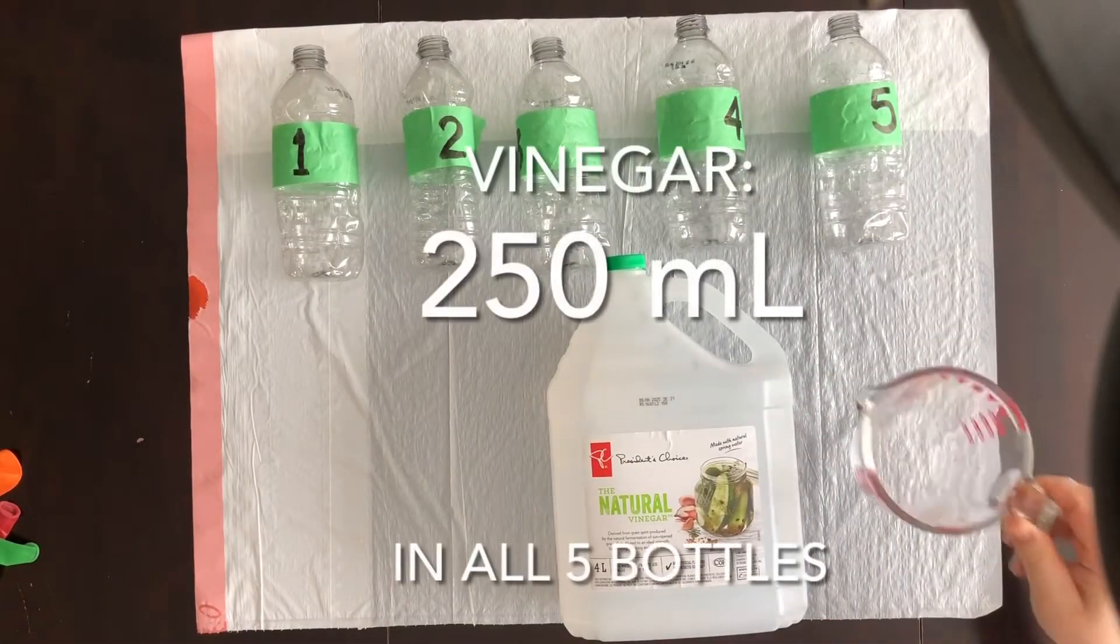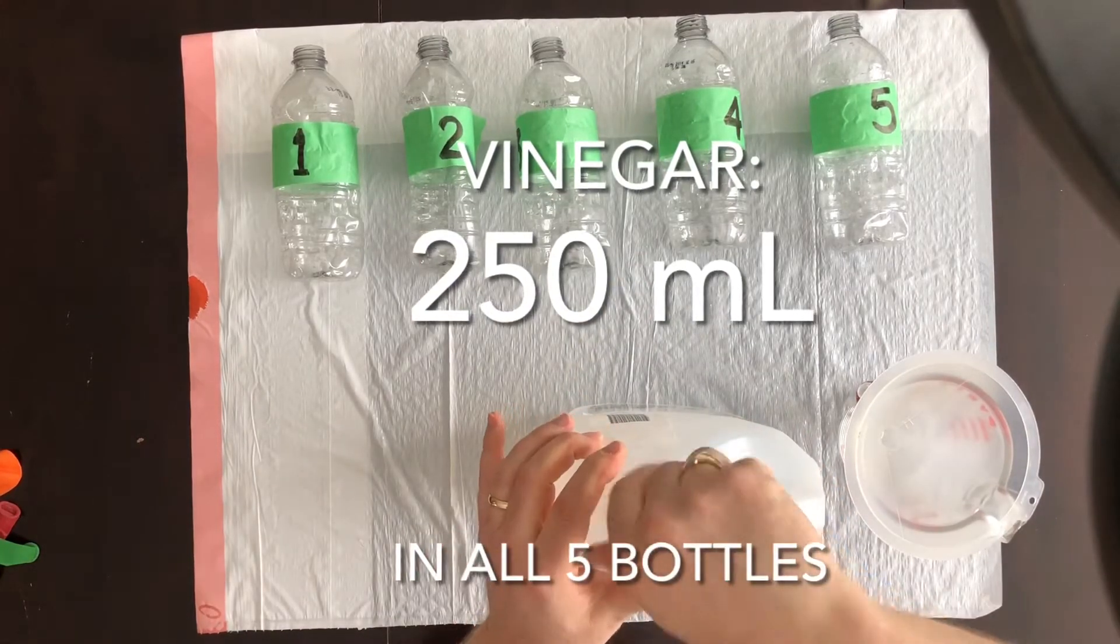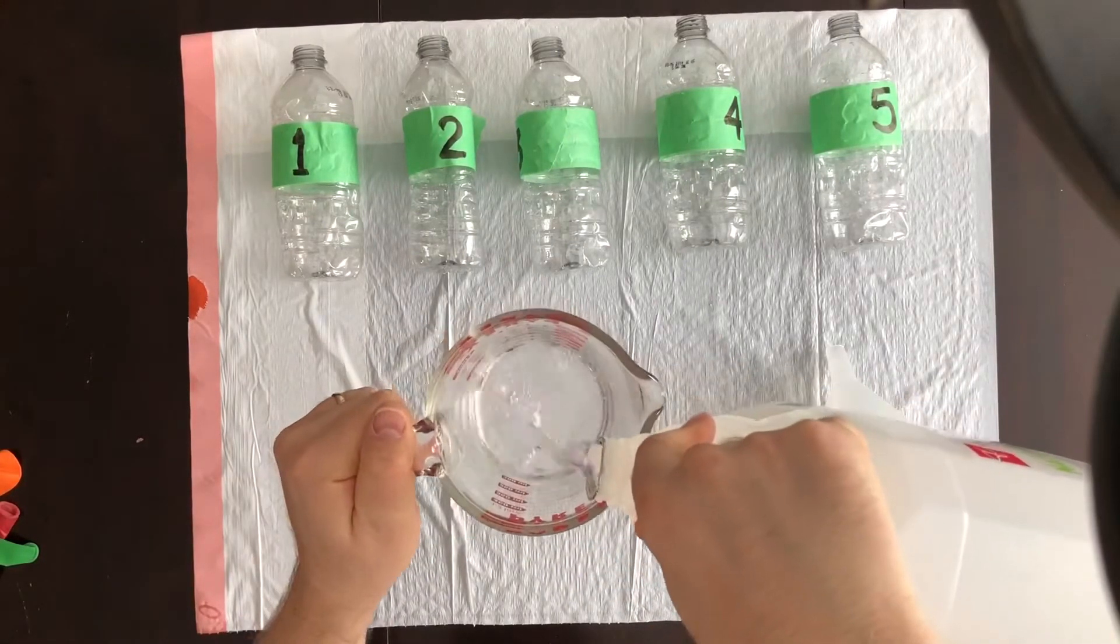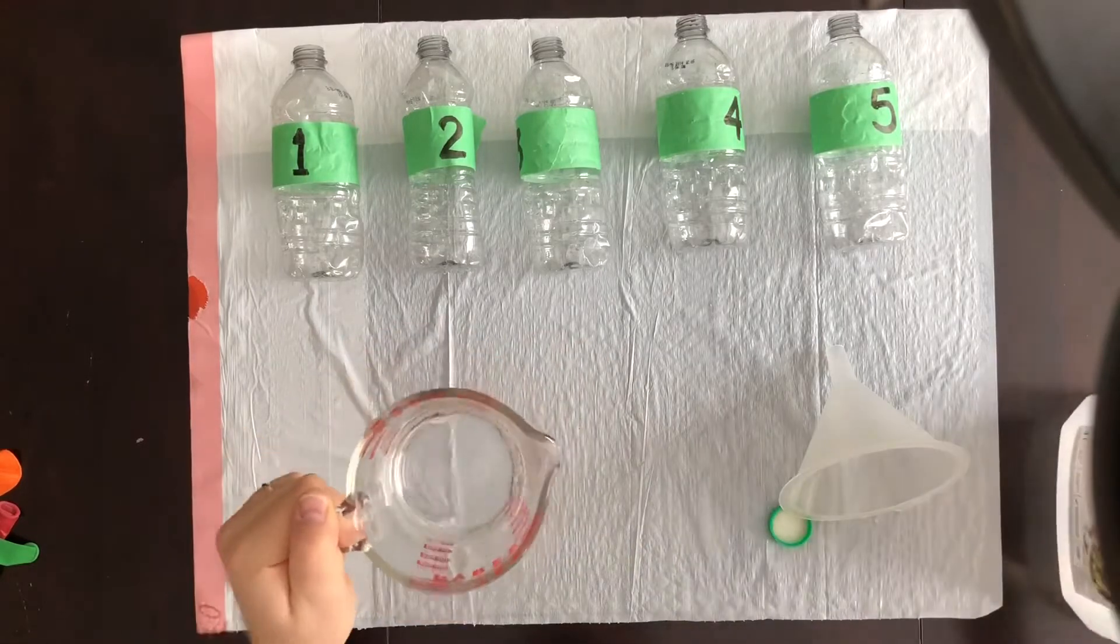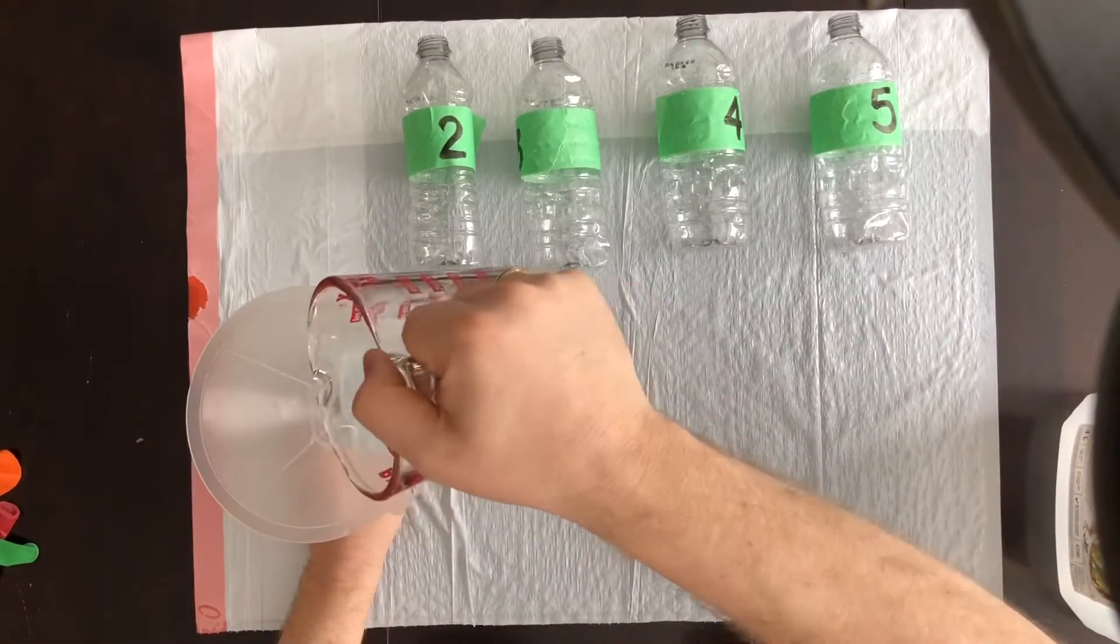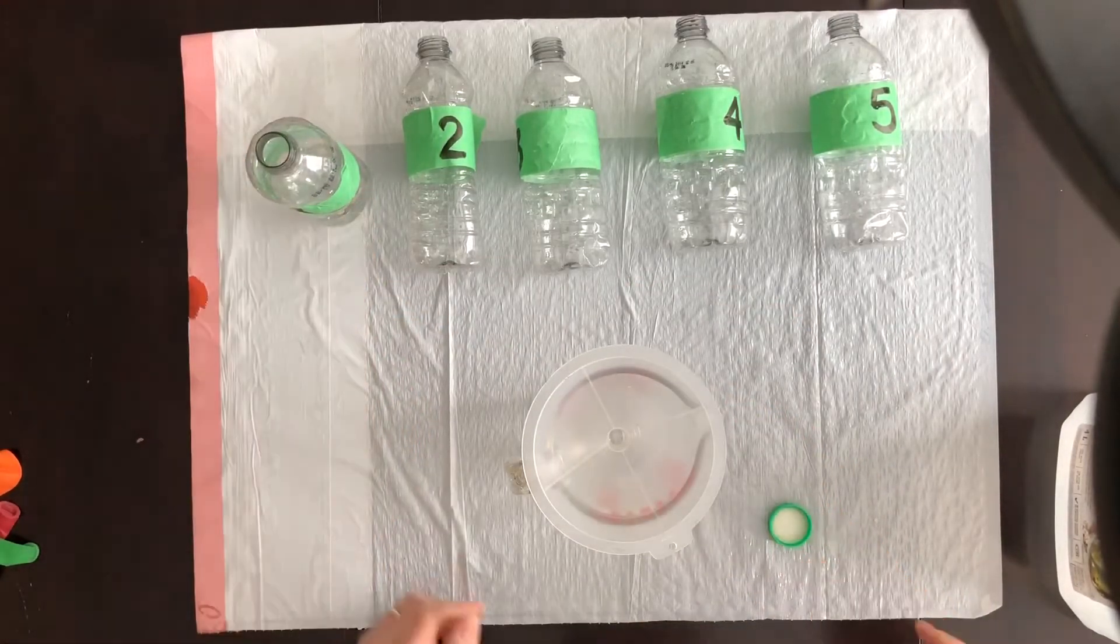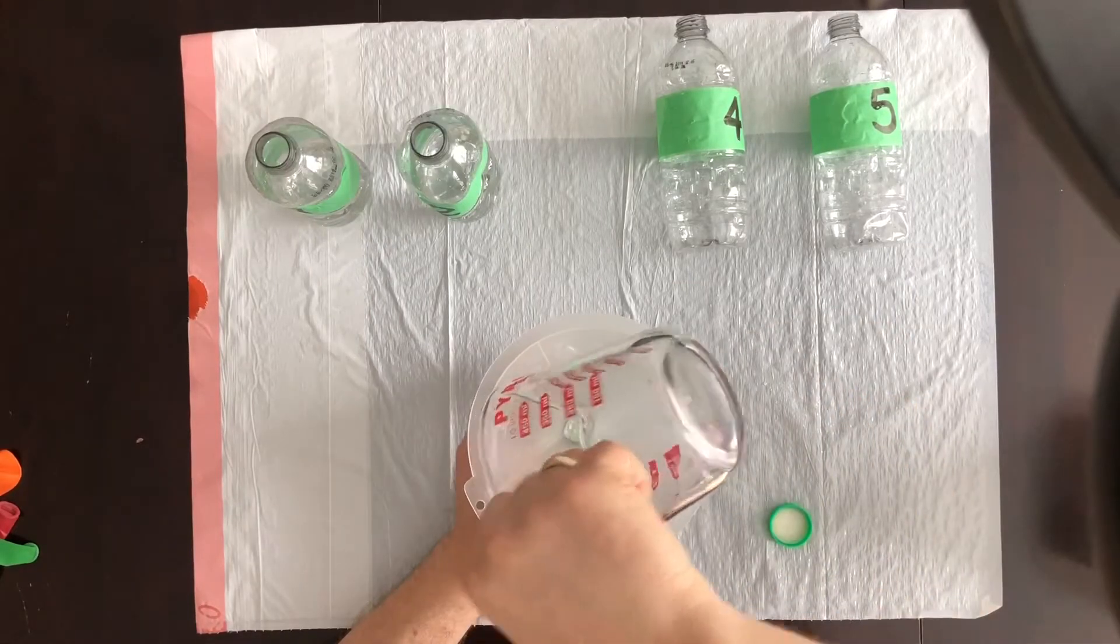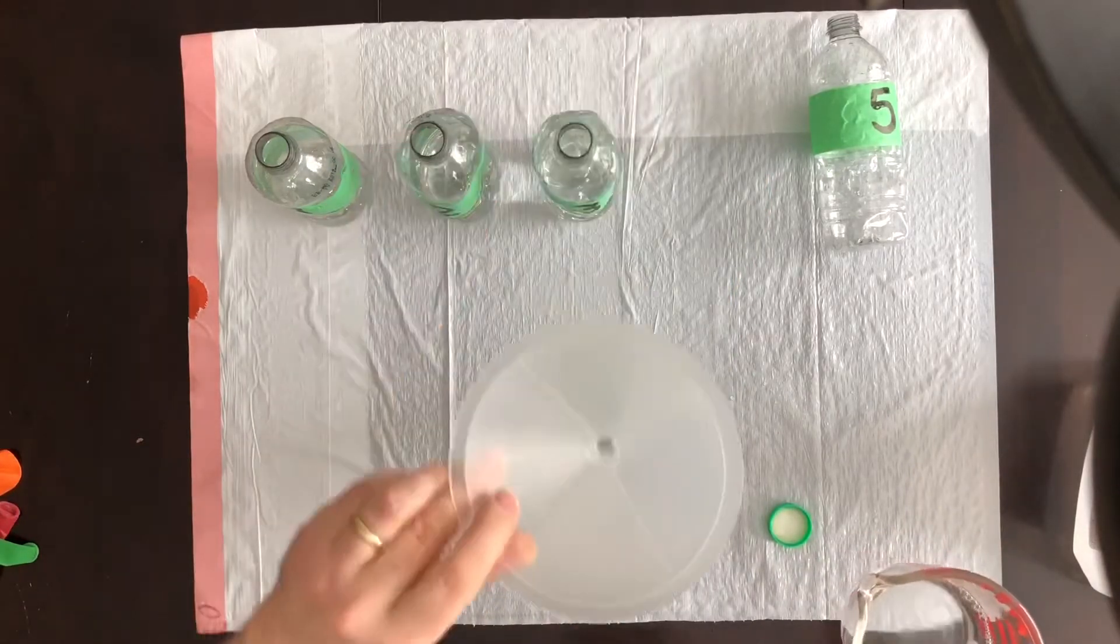You can read the full procedure in your lab document. We'll just skim over the basics quickly here. Add 250 milliliters of vinegar into the measuring cup. Measure it carefully. Use the funnel to decant or pour the vinegar from the measuring cup into one of the bottles. Each of the bottles needs 250 milliliters of vinegar. So repeat this step until all five bottles are full. Don't put the caps on the bottles. We won't need them.